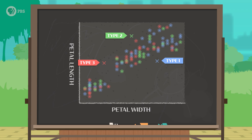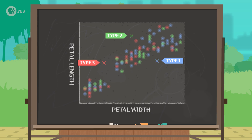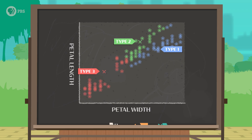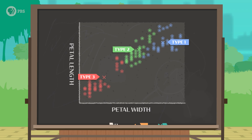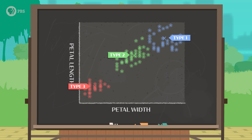Logically, we know that irises of the same species tend to have similar petals, so those data points should be clustered together. Since we did a correction or learning step, we can repeat the process, starting with a new prediction step. Let's predict new labels using the X's that mark the averages of each label. We'll give each data point the label of its closest X — type 1, type 2, or type 3 — and then we'll calculate new averages. That's better, but still not the cleanest clusters. So we can repeat the process again: predict, learn, predict, learn.